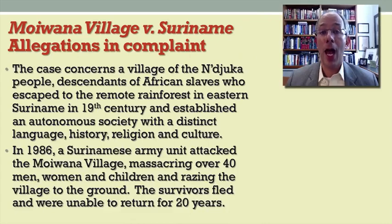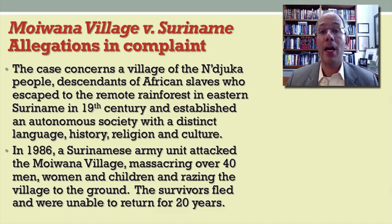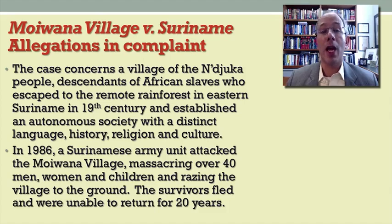Let's first look at some of the allegations in the complaint. The case concerns the Njuka people, who are descendants of African slaves brought to South America who, in the 19th century, escaped to the remote rainforests in the eastern part of Suriname and established their own autonomous society there. That society was largely cut off from the rest of the country, and in part because of the African origins of the former slaves and in part because of that isolation, they developed their own distinctive language, religion, and culture.